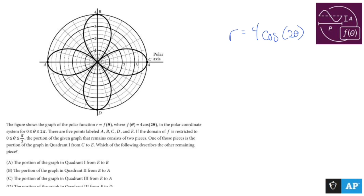There are five points labeled A, B, C, D, E. E is right in the middle, there's A, B, and D. If the domain of f is restricted to - okay, so now we're restricting things.